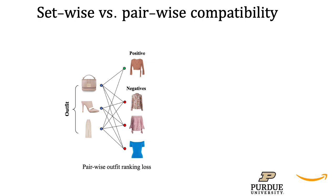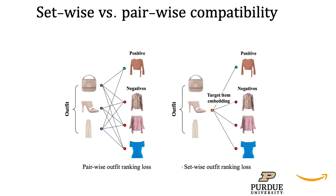The state-of-the-art retrieval method CSNET uses a pairwise ranking loss that considers the pairwise compatibility of the target item with each individual item in the outfit. In contrast, our set-wise ranking loss generates a single target item embedding that already captures the compatibility relationships for a set of outfit items, and hence does not require pairwise comparisons with individual outfit items. The set-wise outfit ranking loss forces the target item embedding to move closer to the positive that matches the global style of the overall outfit, and further apart from the negatives that are incompatible with the outfit.